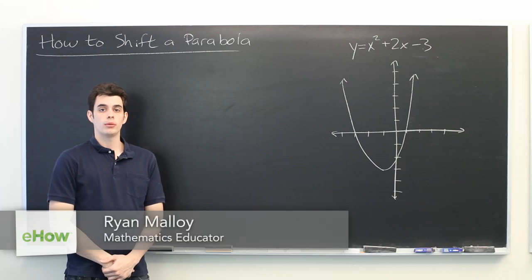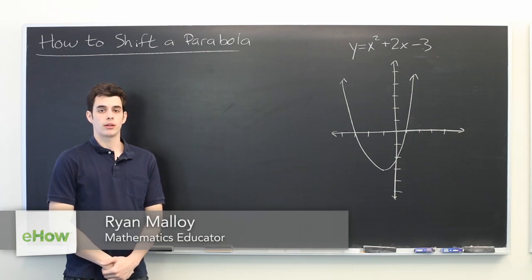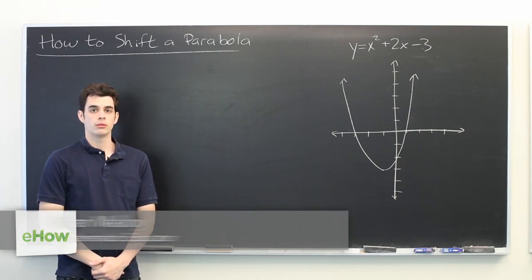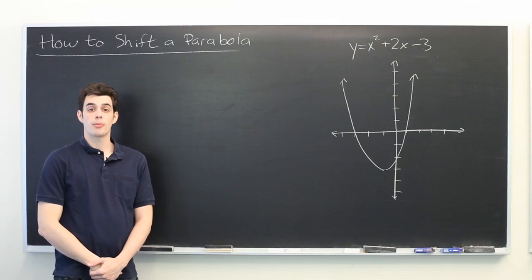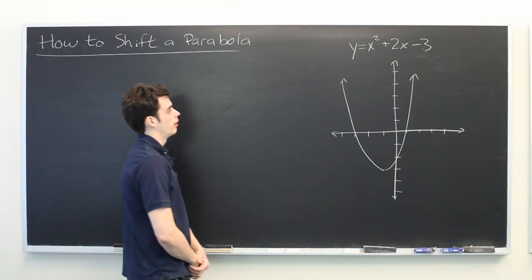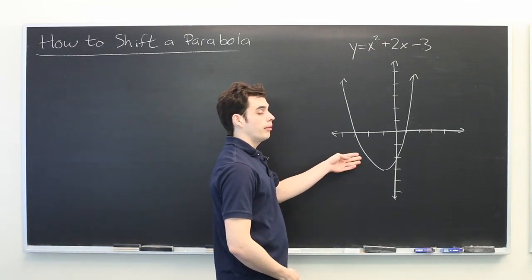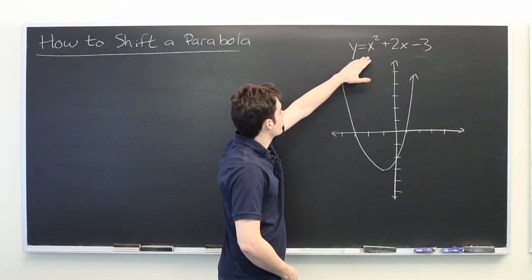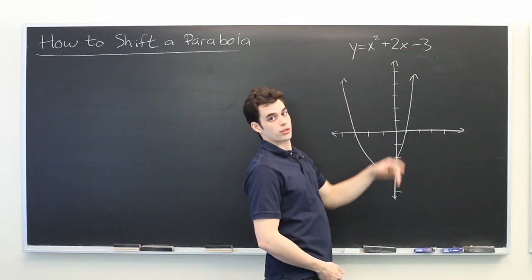Hi there. This is Ryan Malloy here at the World Wide Center of Mathematics. In this video we're going to discuss how to shift a parabola. So here we have a parabola that is defined by the equation y equals x squared plus 2x minus 3.